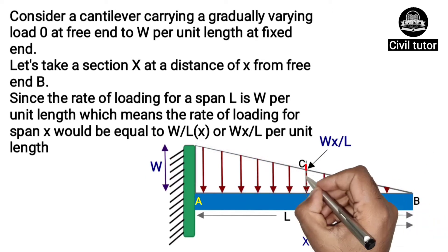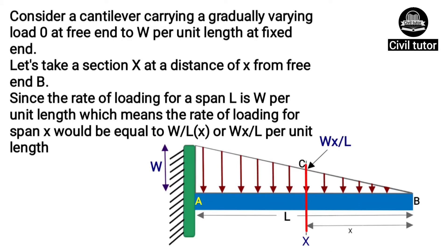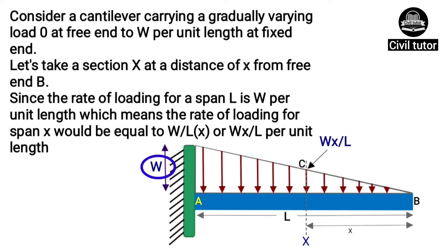Now let's take a section x at a distance of x from the free end B. Since the rate of loading for a span L is W per unit length, the rate of loading for span x would be equal to Wx/L per unit length.